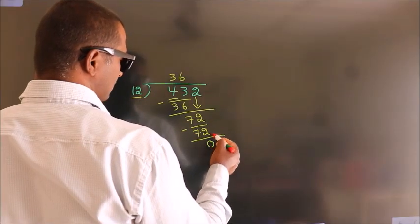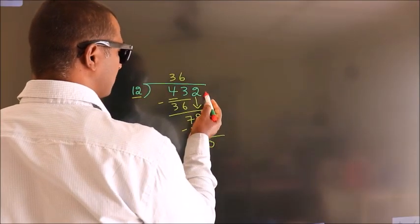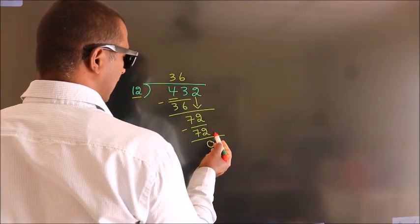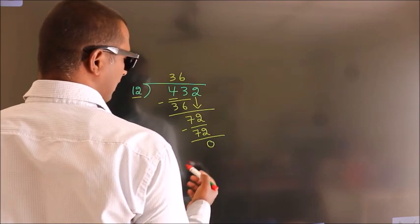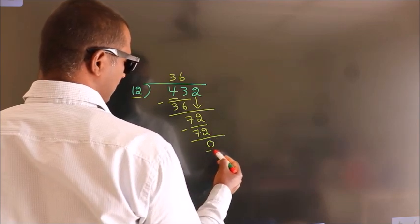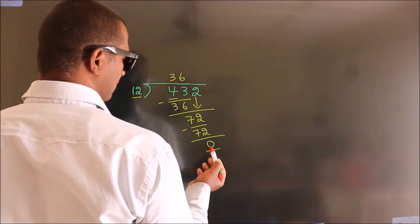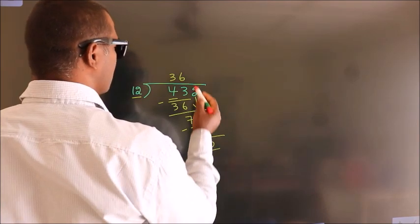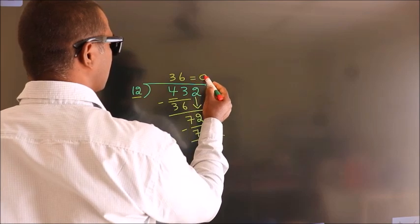After this, there are no more numbers to bring down, and we got remainder 0. So this is our quotient.